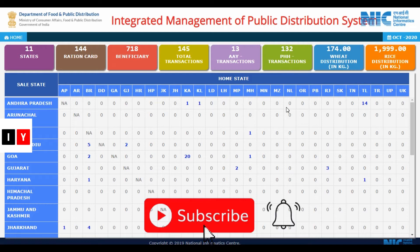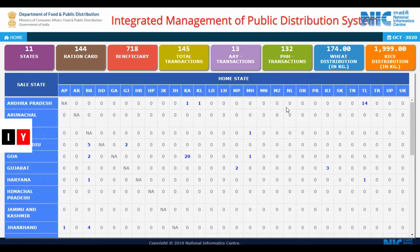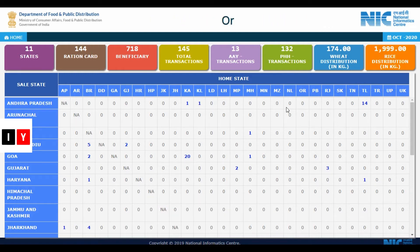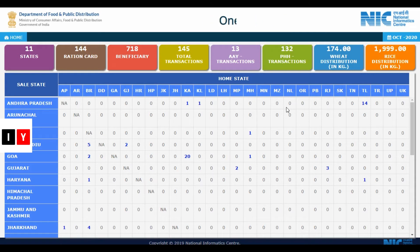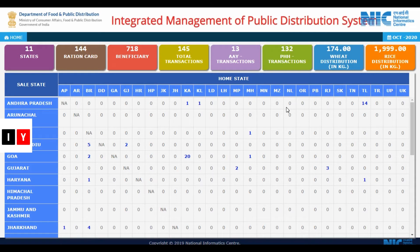People can now check the apply online process using the state list of states already implementing the scheme via the dashboard at the official website. The main objective of this scheme is to ensure food security and give freedom to beneficiaries to purchase ration from any shop. Aadhaar-linked ration card linking will ensure that no person is deprived of getting subsidized food grains under the food security scheme, even if they migrate from one place to another.